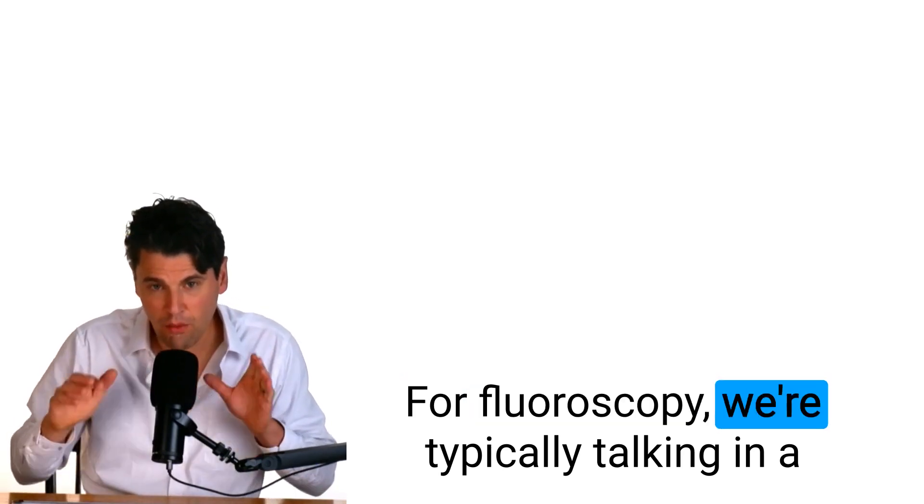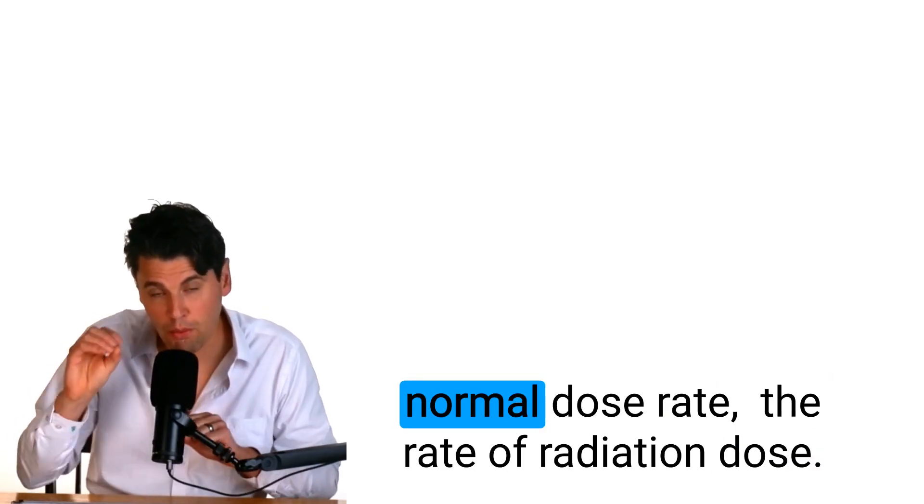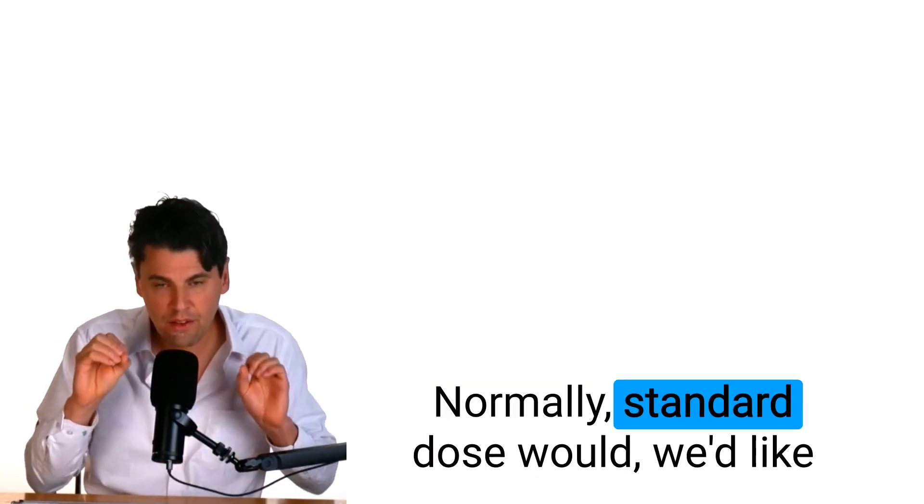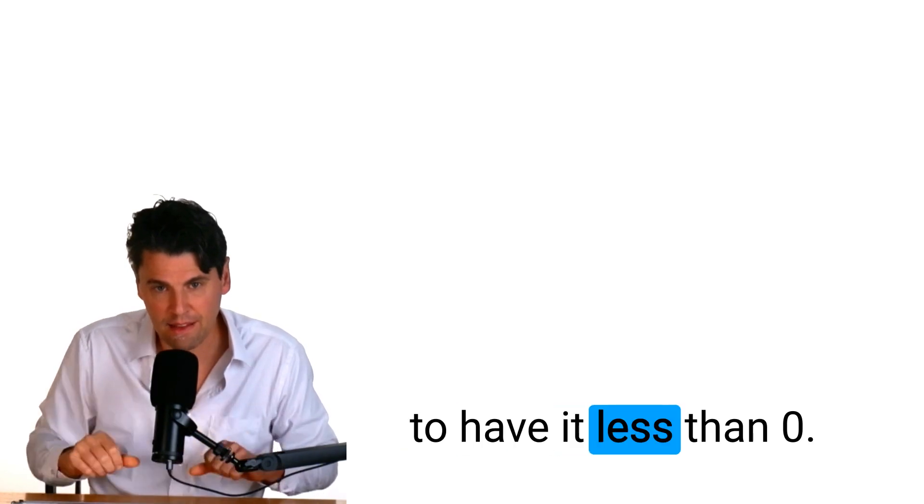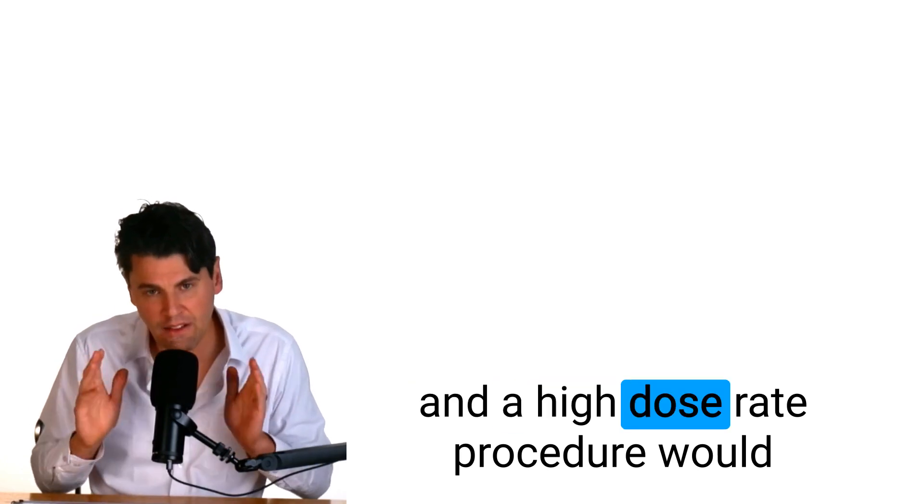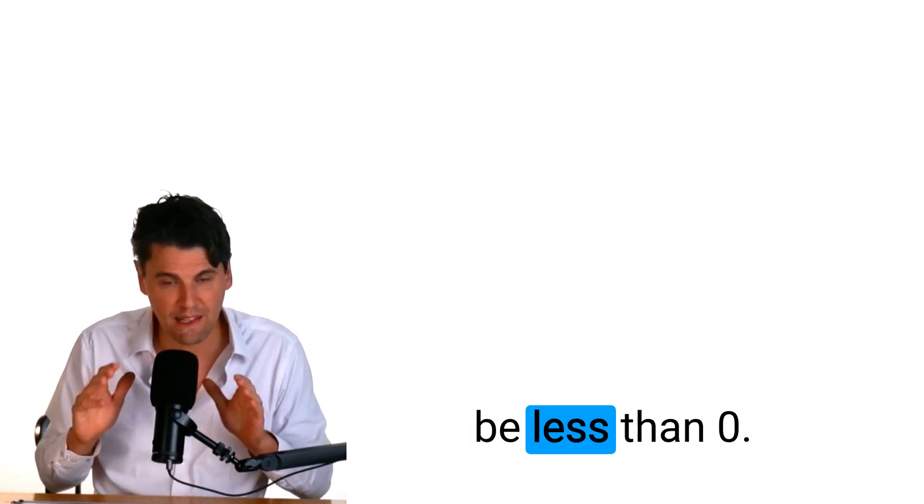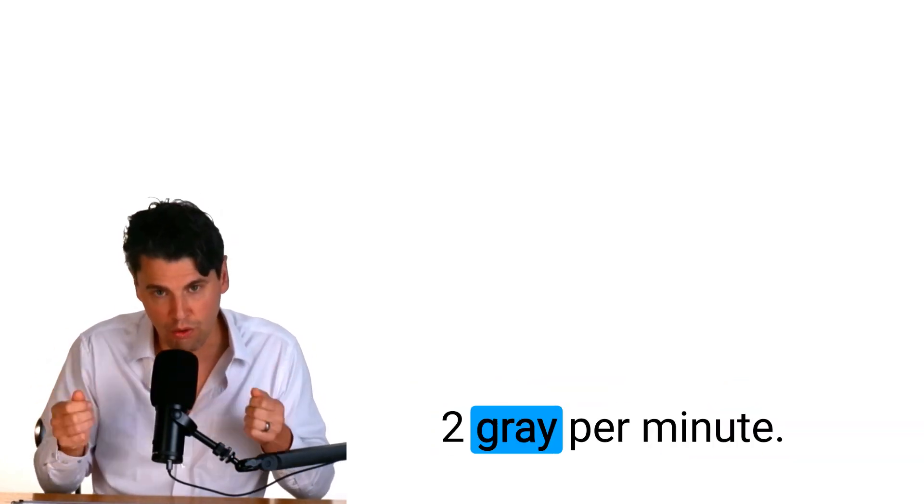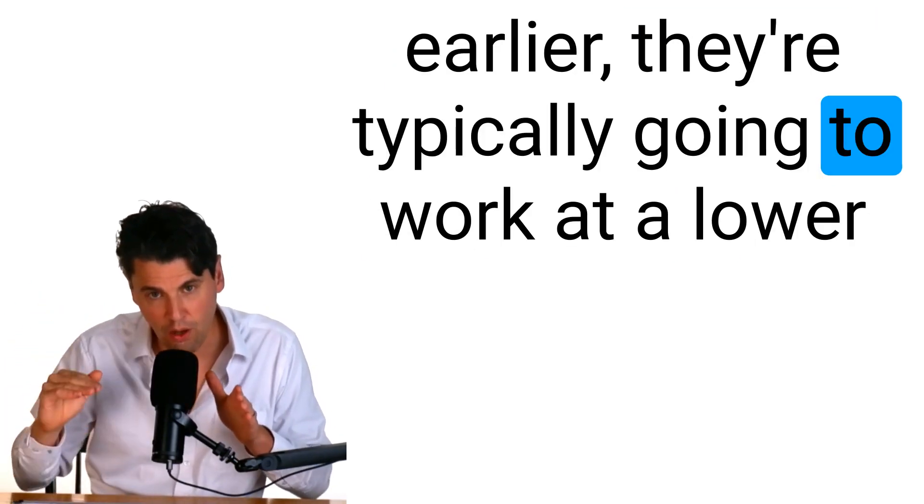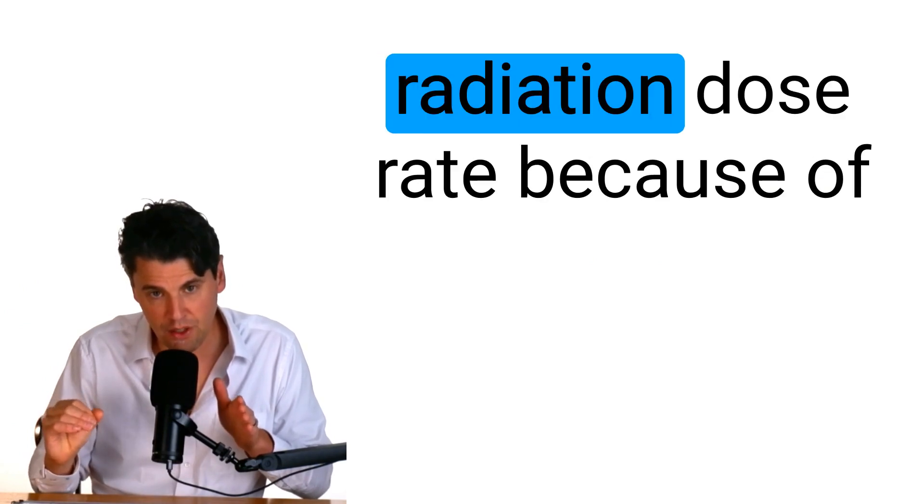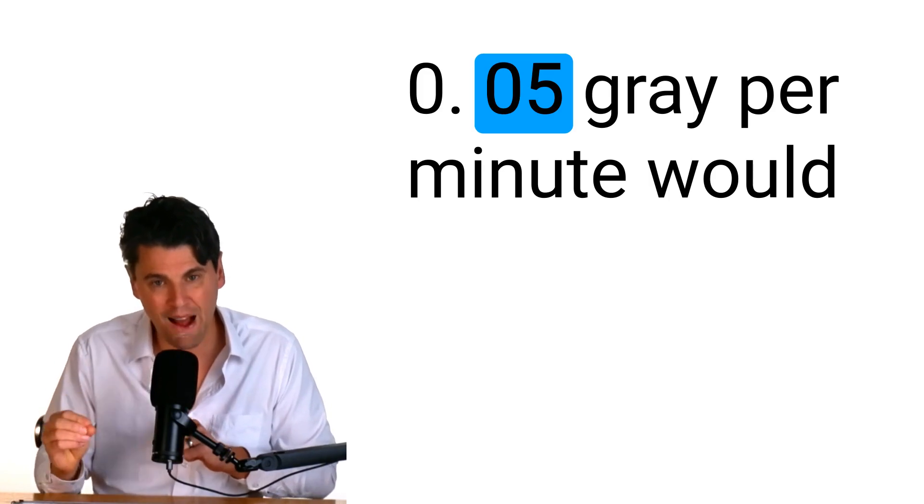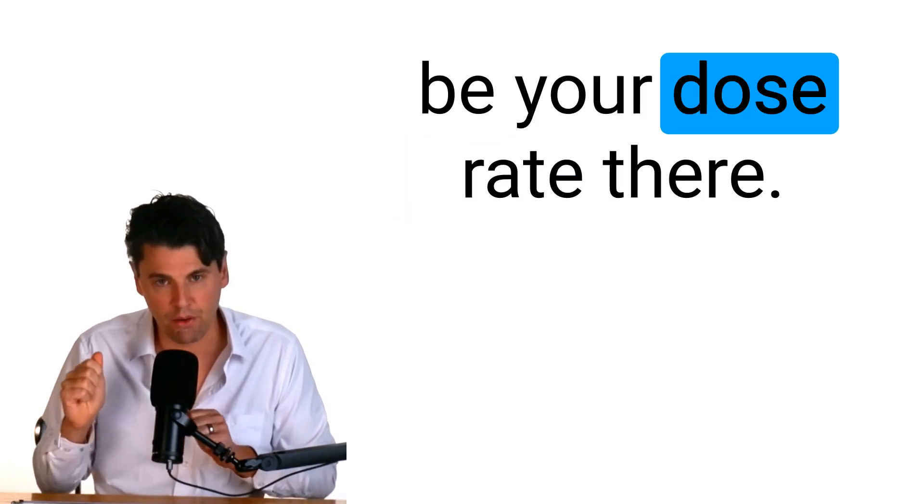For fluoroscopy we're typically talking in a normal dose rate, standard dose would be less than 0.1 gray per minute and a high dose rate procedure would be less than 0.2 gray per minute. And the mobile systems that we talked about earlier they're typically going to work at a lower radiation dose rate because of the surrounding environment, 0.05 gray per minute would be your dose rate there.